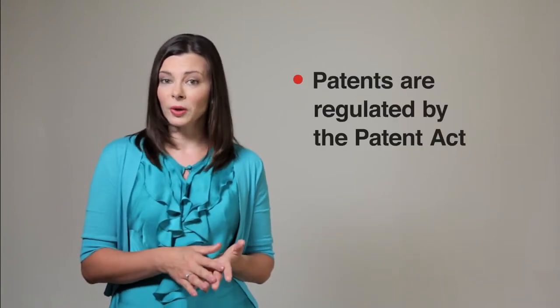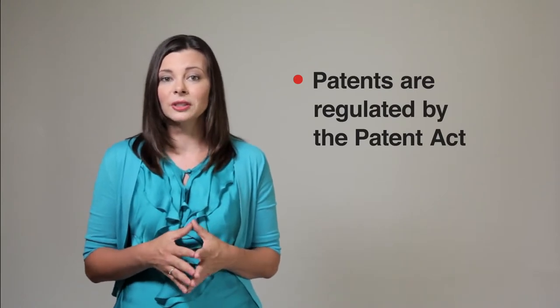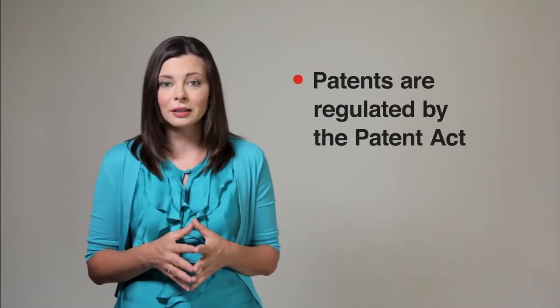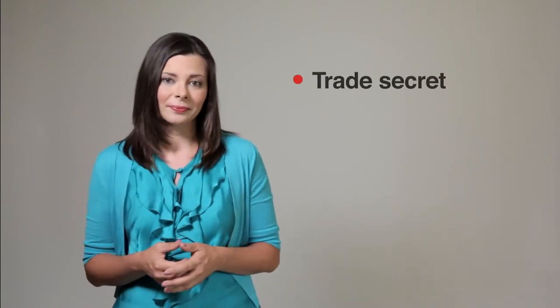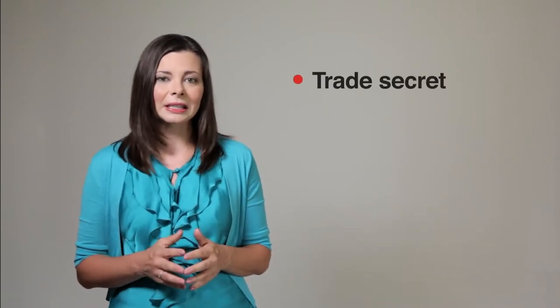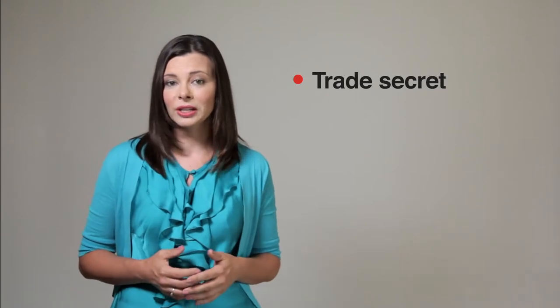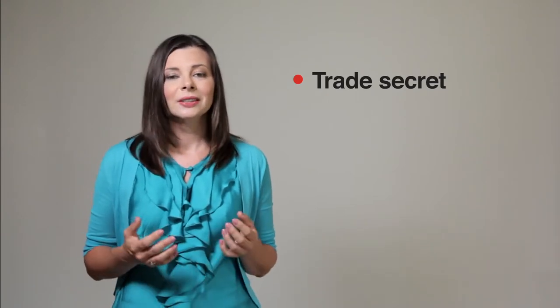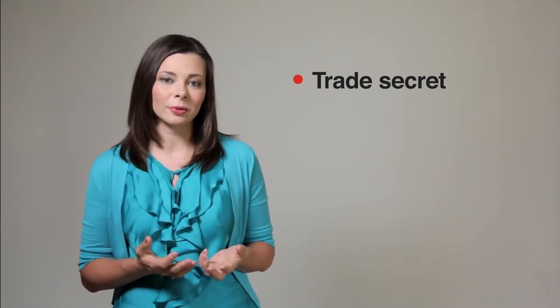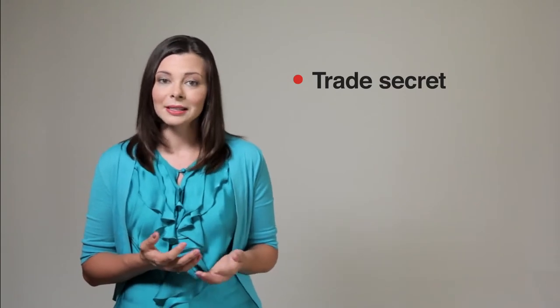You can choose not to register a patent to protect your invention and simply keep its description and technical information secret. The invention is then known as a trade secret. However, if someone else independently invents or discovers your unregistered invention or trade secret, there's nothing that you can do to prevent that person from applying for a patent, selling the invention, or publishing the technical information.